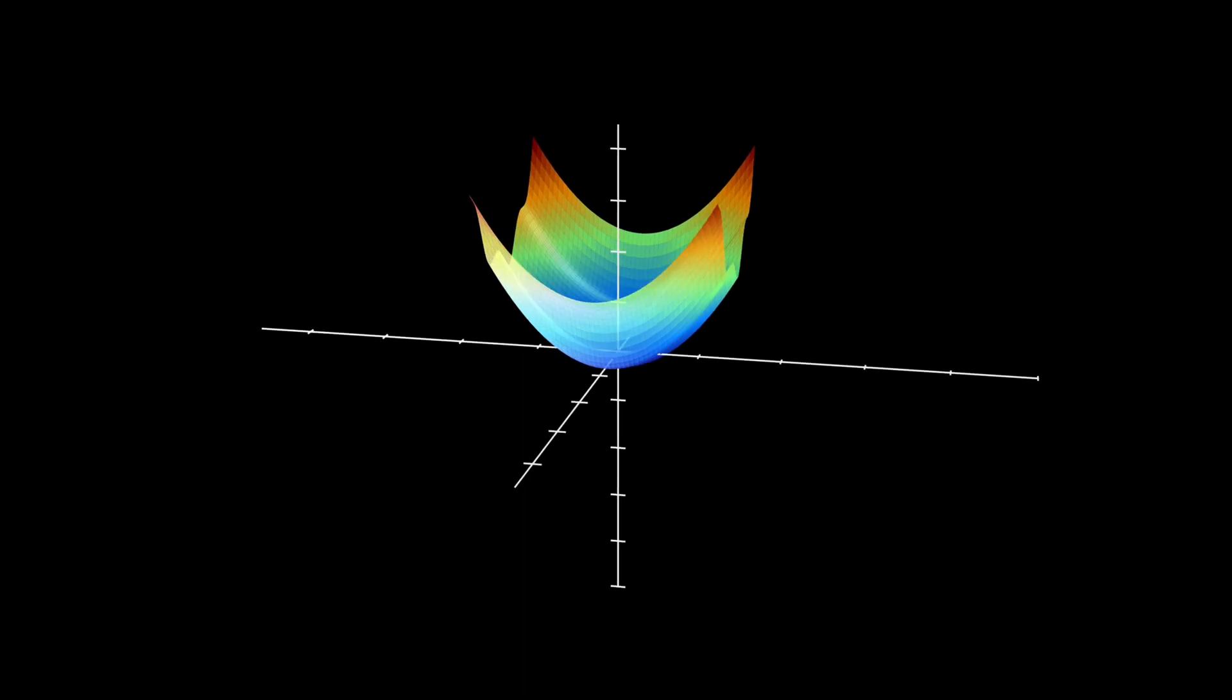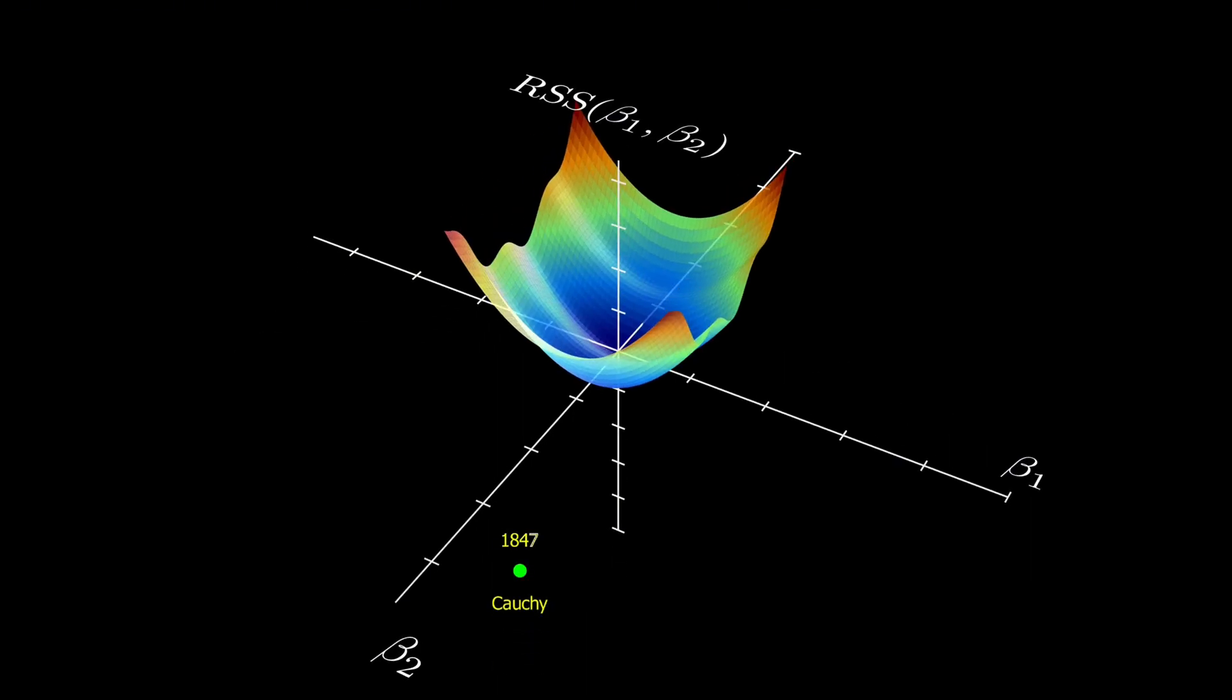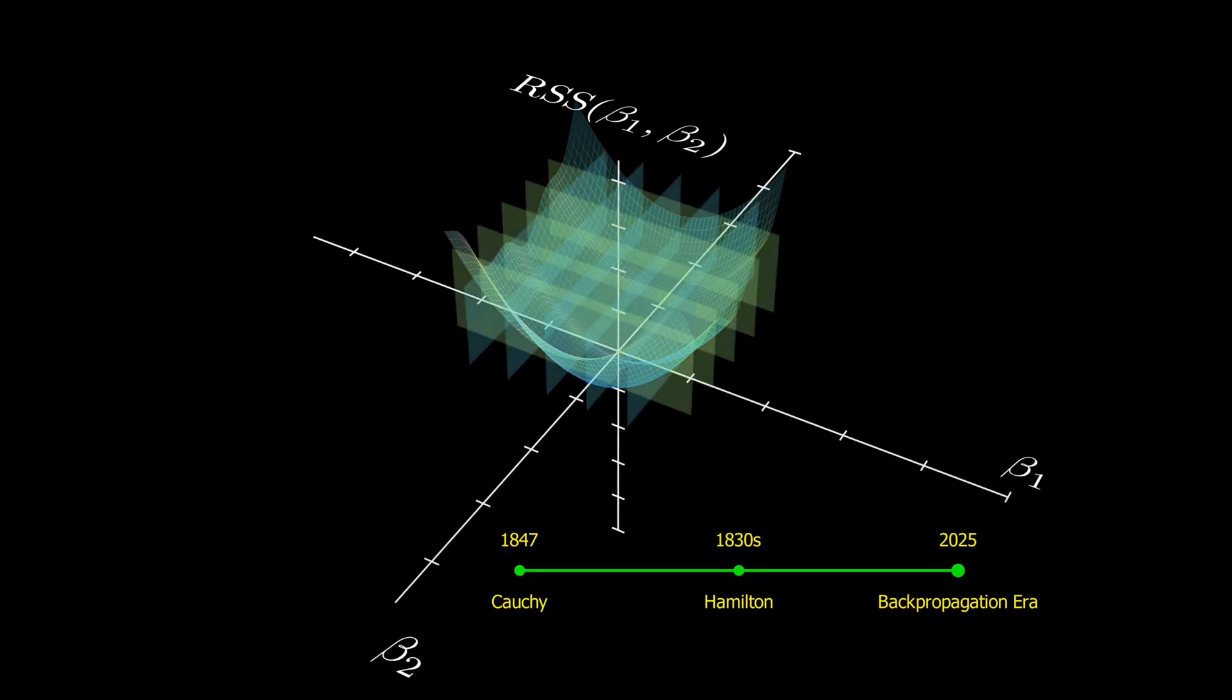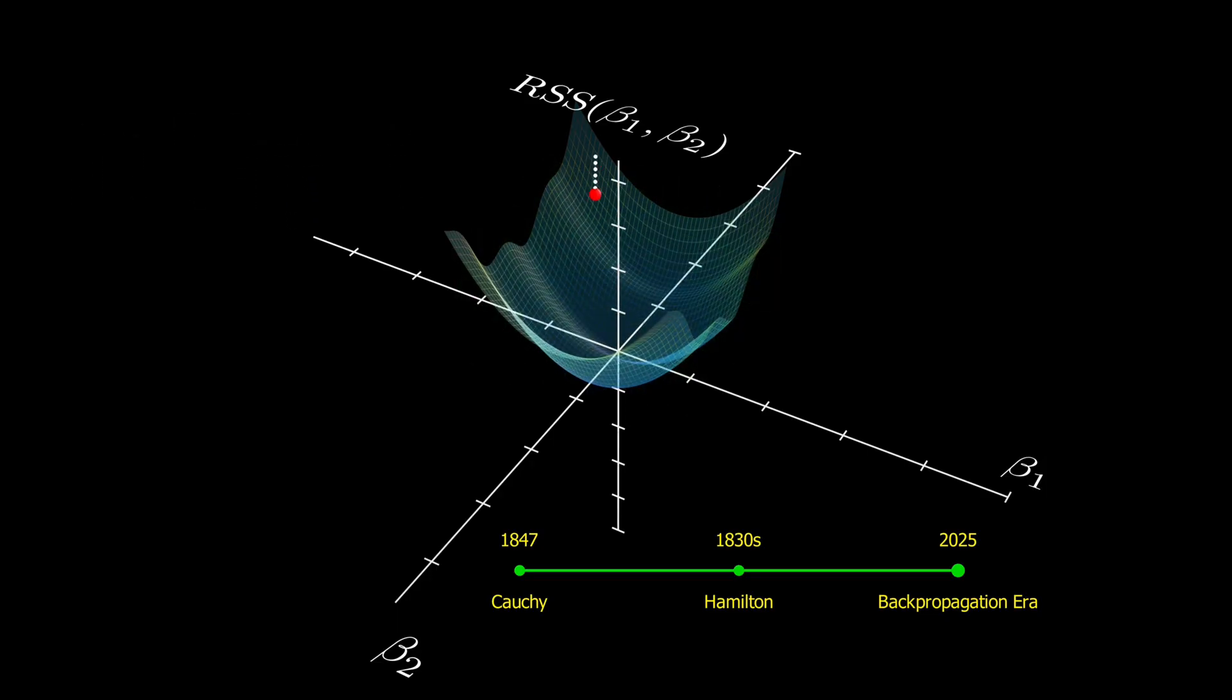So there you have it. An idea born in the 19th century is now at the heart of how we train the most advanced AI systems in the 21st century. Gradient descent helps us navigate high-dimensional landscapes without ever needing to solve complicated equations.